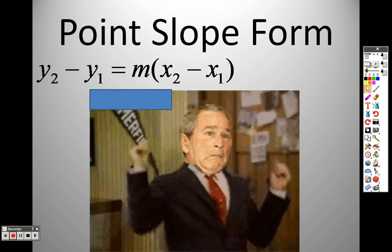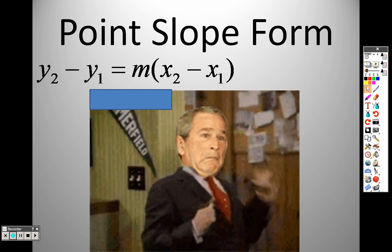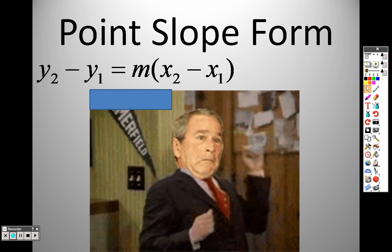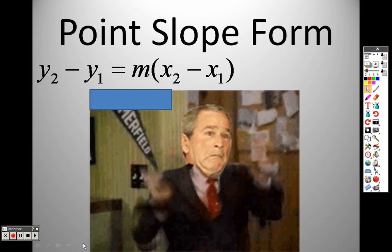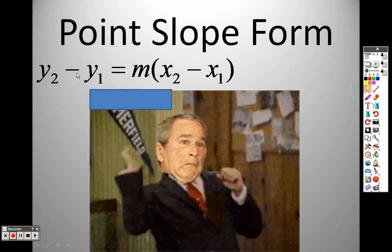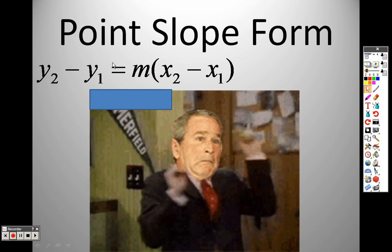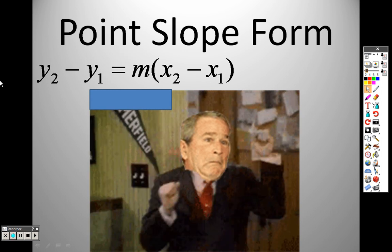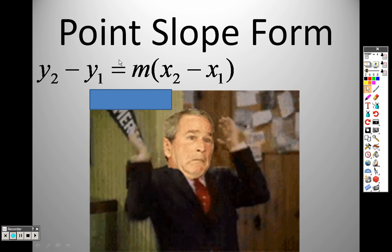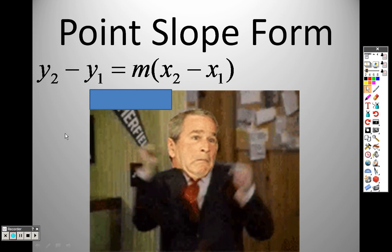We have point-slope form, which it's my duty as a math teacher to show you, but I very rarely use it because I don't see the importance of it. As you can see, it's just a rewriting of the slope with some missing x or y values — we have y2 and y1, x2 and x1, and m for the slope.